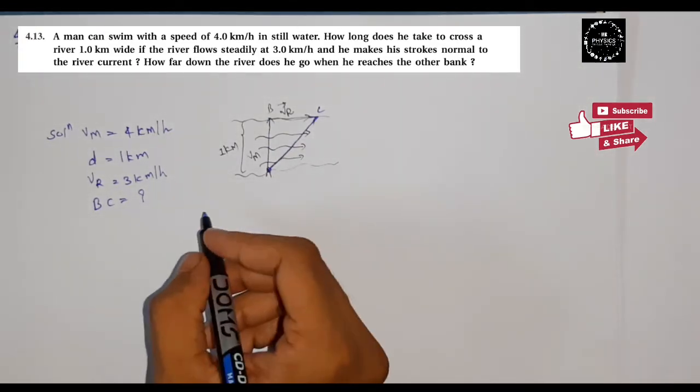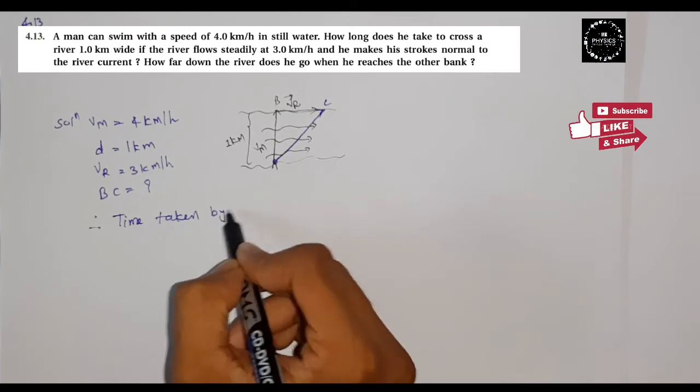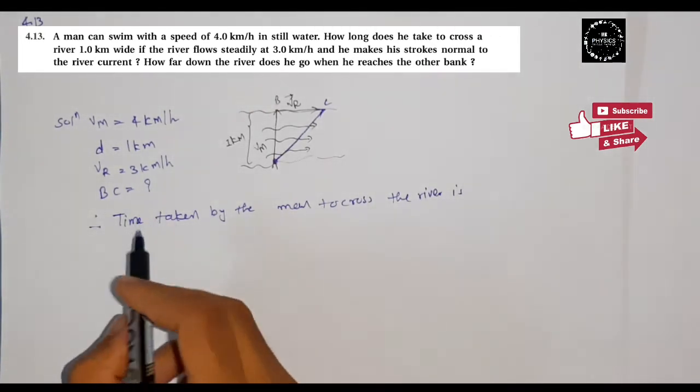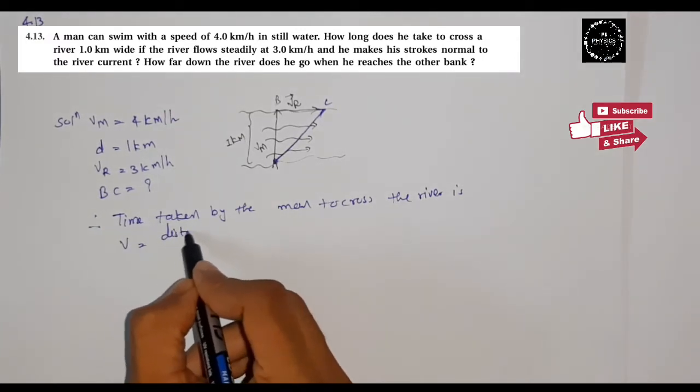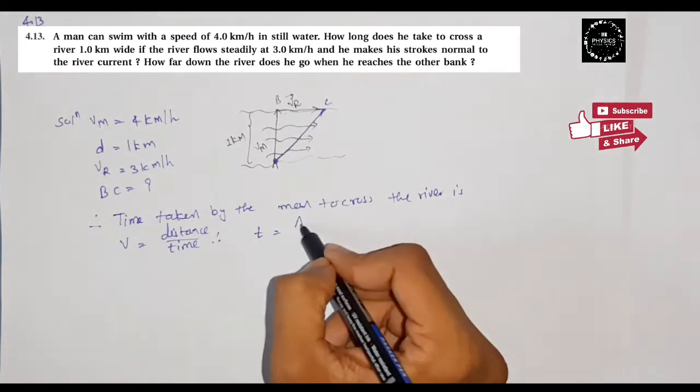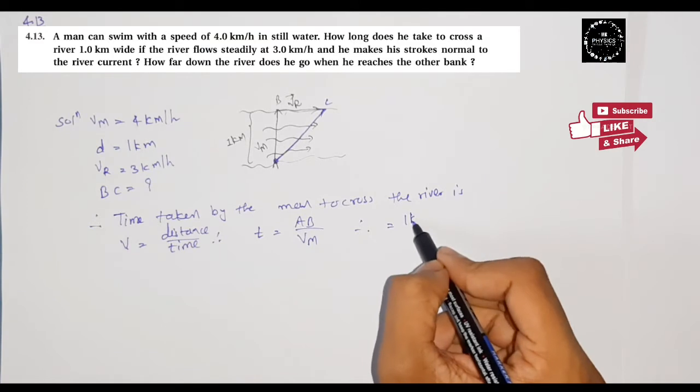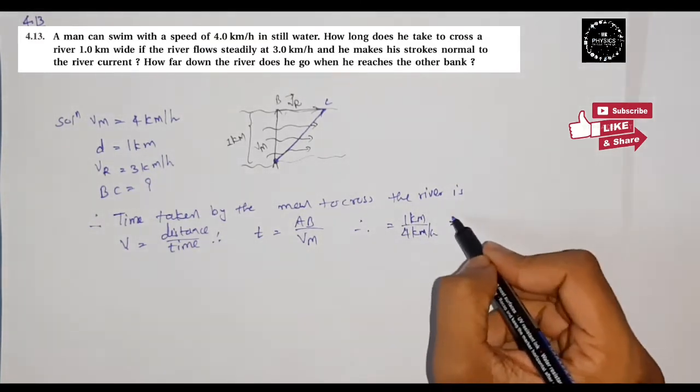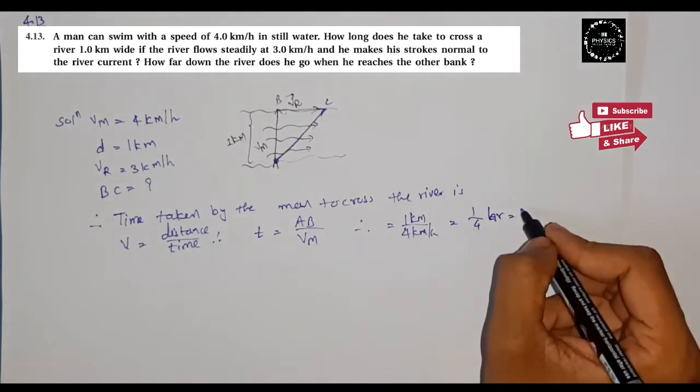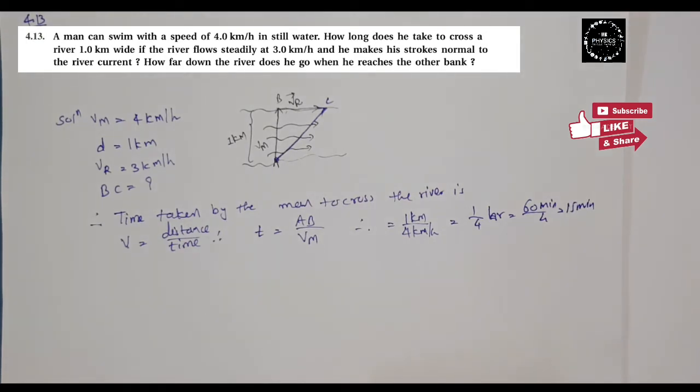So we can write like this: the time taken by the man to cross the river. Here velocity equals distance by time, this is our formula. Time t equals distance AB divided by velocity. AB equals 1 km divided by 4 km per hour, so 1 by 4, which equals 60 minutes divided by 4, which equals 15 minutes.